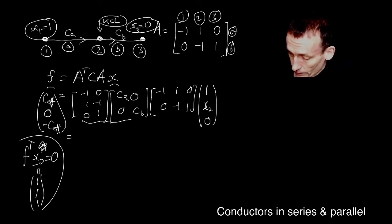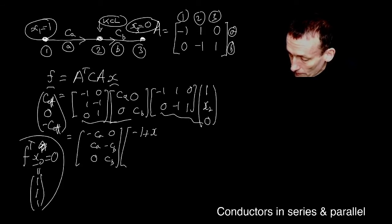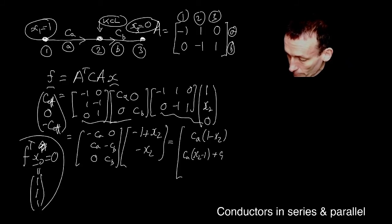So maybe let's do what we did before and multiply these two together. Don't we get minus CA, CA, zero. And then zero, minus CB, CB. And then let's multiply these two together. And don't we get minus one plus X two. And minus X two. And then let's multiply these two together. Looks like we get isn't it CA times one minus X two. I think we get CA X two minus one plus CB X two. And then finally we get minus CB X two.